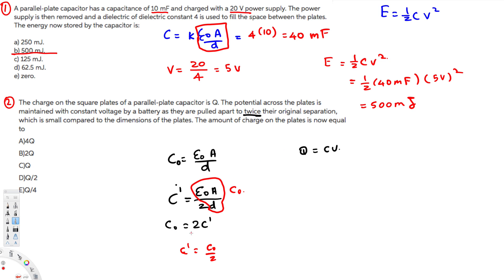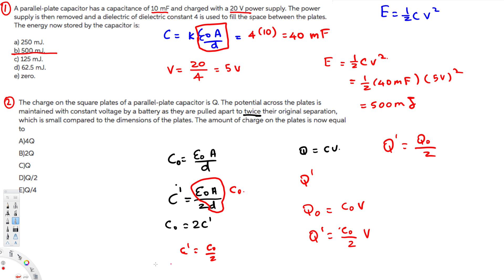Now let's find the new charge Q-prime. The initial charge is Q-naught equals C-naught times V. After separating the plates, Q-prime equals C-prime times V, which is C-naught over 2 times V. Since C-naught times V equals Q-naught, we can substitute to get Q-prime equals Q-naught divided by 2.